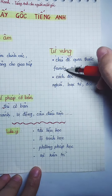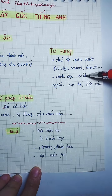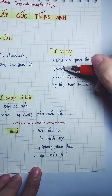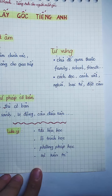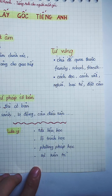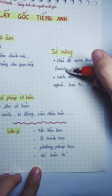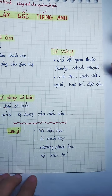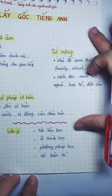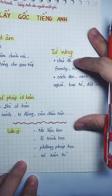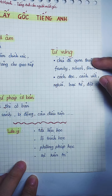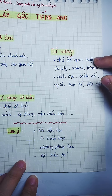Về từ vựng: mất gốc thì tìm các chủ đề quen thuộc học trước. Học một từ cần: cách đọc, cách viết, nghĩa, loại từ, và đặt câu để nhớ lâu. Ví dụ học từ 'family' thì phải viết cách đọc, nhớ nghĩa, loại từ, và đặt câu. Sau khi học các chủ đề quen thuộc thì quay lại với sách giáo khoa.